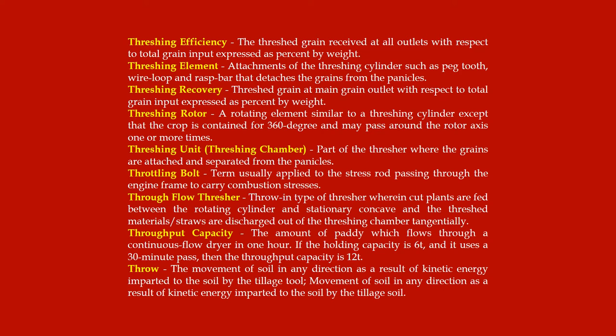Threshing unit or threshing chamber: the part of the thresher where grains are detached and separated from the panicles. Throttling bolt: a term usually applied to the stress rod passing through the engine frame to carry combustion stresses. Throw-in type thresher: a type of thresher wherein cut plants are fed between the rotating cylinder and stationary concave, and the threshed materials or straws are discharged out of the threshing chamber tangentially. Throughput capacity: the amount of paddy which flows through a continuous flow dryer in one hour.